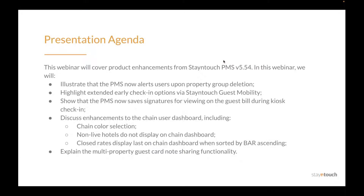Today's presentation will cover how you can get the most out of the Stay in Touch PMS, Version 5.54 Project Release. In this webinar, we will illustrate that the PMS now alerts users upon property group deletion, highlight extended early check-in options via Stay in Touch Guest Mobility, show that the PMS now saves signatures for viewing on the guest bill during kiosk check-in, discuss enhancements to the Chain User Dashboard including chain color selection, non-live hotels do not display on the Chain Dashboard, close rates display last on the Chain Dashboard when sorted by bar ascending, and finally we'll explain the multi-property guest card note sharing functionality.